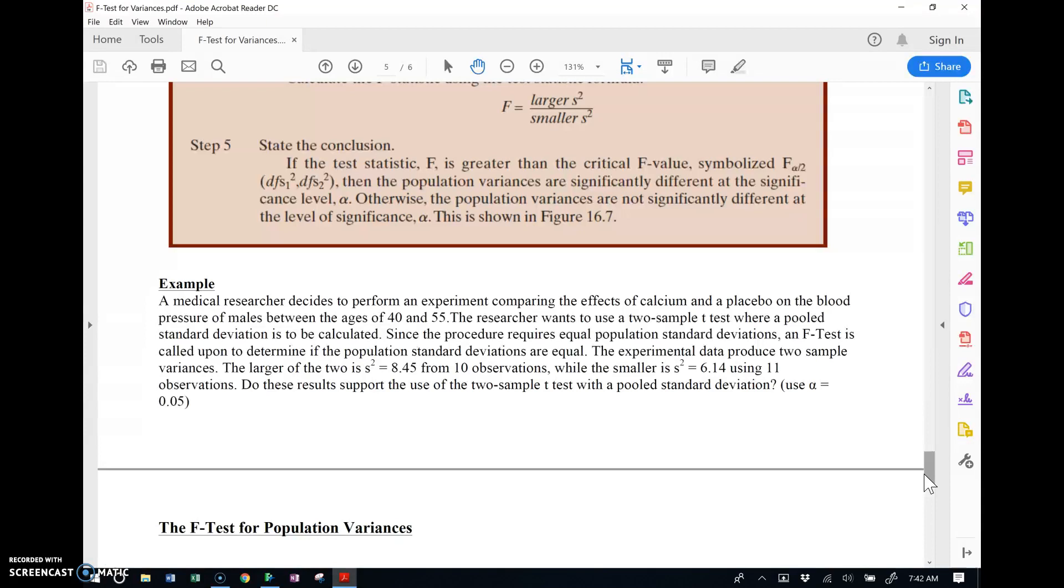All right so a medical researcher decides to perform an experiment comparing the effects of calcium and a placebo on the blood pressure of males. The researcher wants to use a two-sample t-test where a pooled standard deviation is calculated. Since the procedure requires equal population variances an F-test is called upon to determine if the population standard deviations are equal. All right so naturally this experimenter is going to do a two-sample t-test but he's trying to make the decision: should I pool or should I not pool.